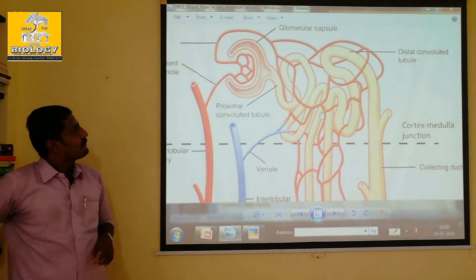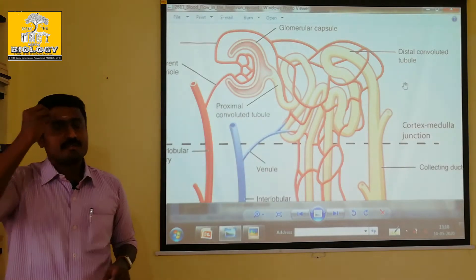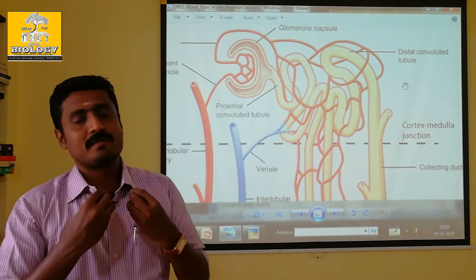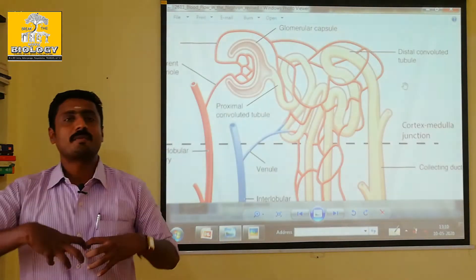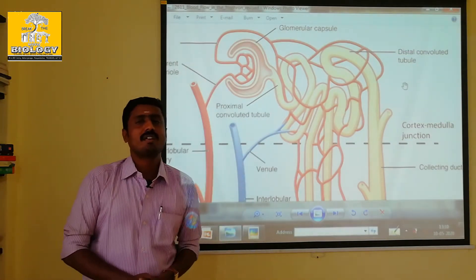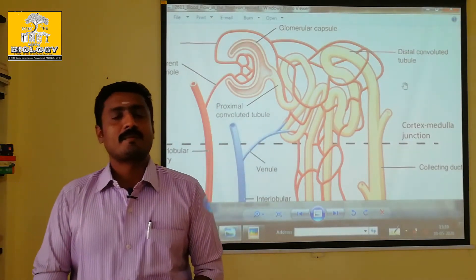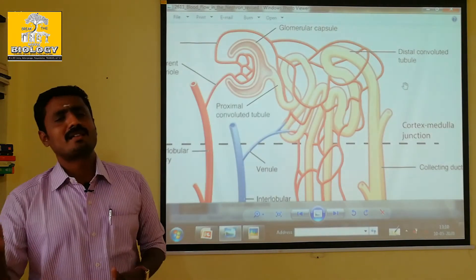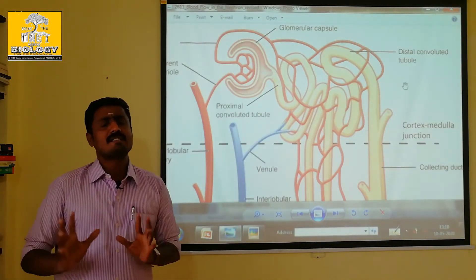Now we have ADH. This is ADH. This is our body. This is the heart, full of blood. These are the endocrine glands.